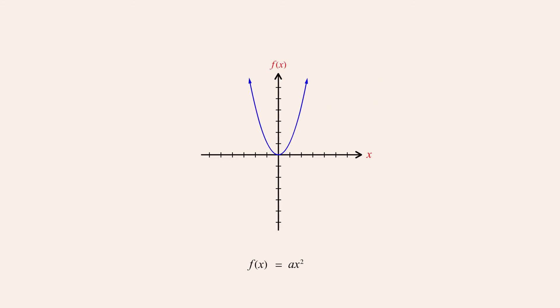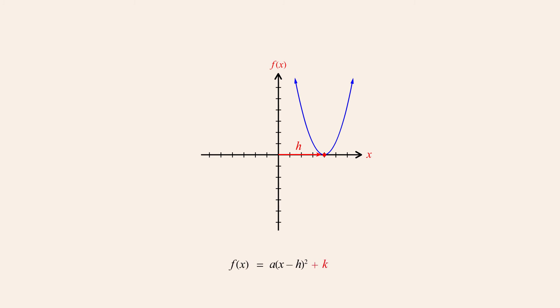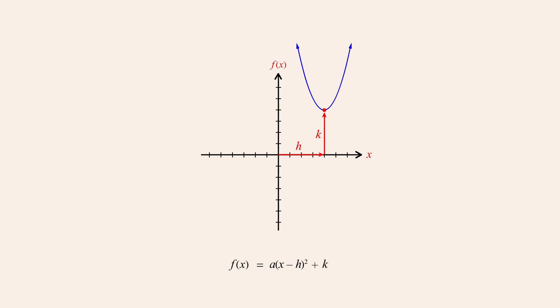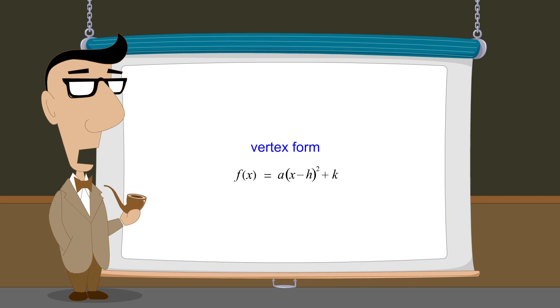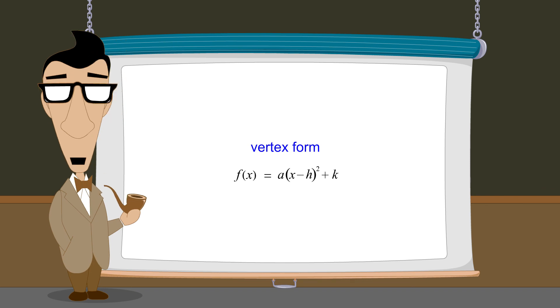So to create the vertex form of a quadratic function, we start with the function ax-squared, which describes a parabola whose vertex is located at the origin, and replace x with x minus h to shift the parabola h units to the left or right depending on the sign of h. Then by adding k to that function, the parabola is also shifted k units vertically up or down depending on the sign of k. The horizontal and vertical coordinates of the vertex are therefore h and k. The method we have just demonstrated is not the only way to derive the vertex form — in a later lecture we will see that it can also be derived by a process called completing the square.